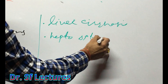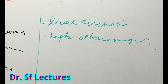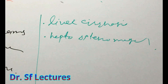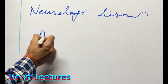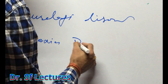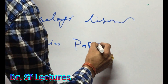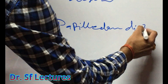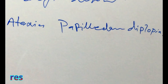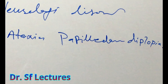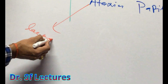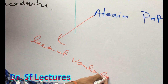Chronic symptoms of excessive Vitamin K include liver cirrhosis and hepatosplenomegaly. Vitamin K is important for our nervous system. Some neurological disorders when somebody takes Vitamin K in excess include ataxia. Ataxia is a lack of voluntary coordination of muscle movement.